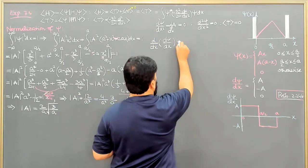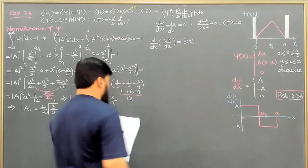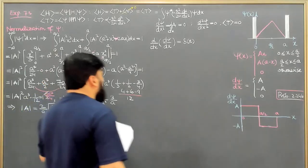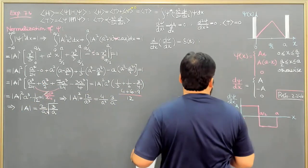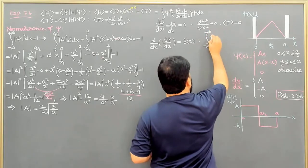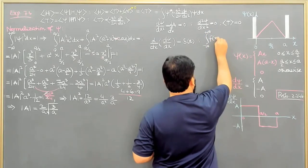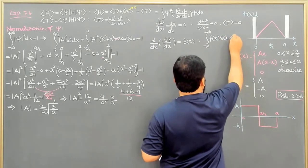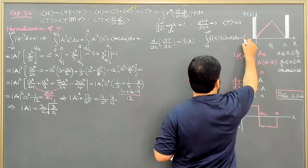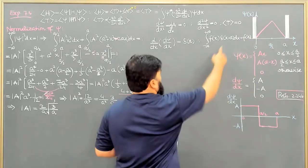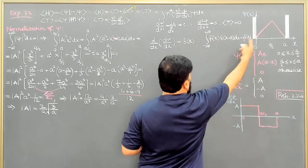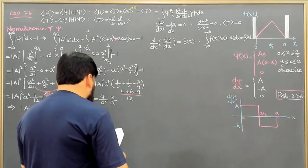It is behaving like a delta function, and I write delta x here. About delta x, we know that the integral from minus infinity to plus infinity of f(x) delta(x minus a) dx equals f(a), if a is between minus infinity and plus infinity. So the value comes out to be f(a), and we will utilize this.